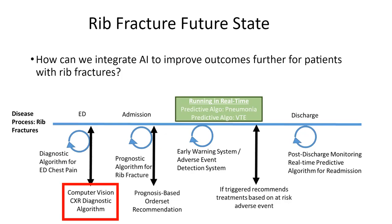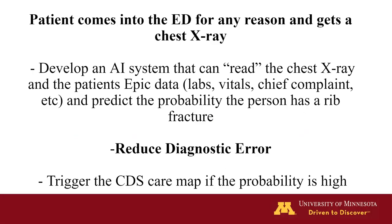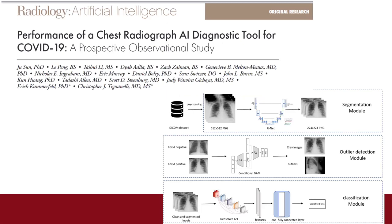The first model I'll show is our computer vision diagnostic algorithm. We've done diagnostic algorithms in COVID-19 as well. A patient comes to the ED, gets an x-ray, and we build an AI system that reads the chest x-ray — not just computer vision, but also integrating structured EHR data through labs and vitals — to predict the probability that the person has a rib fracture. For COVID, we previously developed an AI algorithm that identifies COVID-19 from imaging and generates heat maps showing exactly where in the lung the source of infection is.